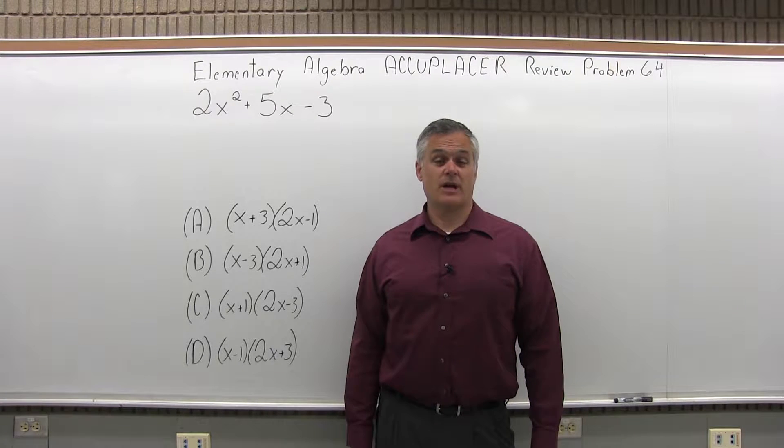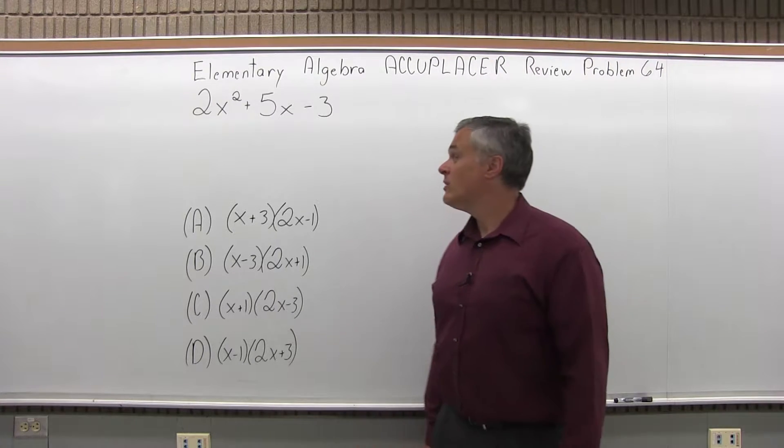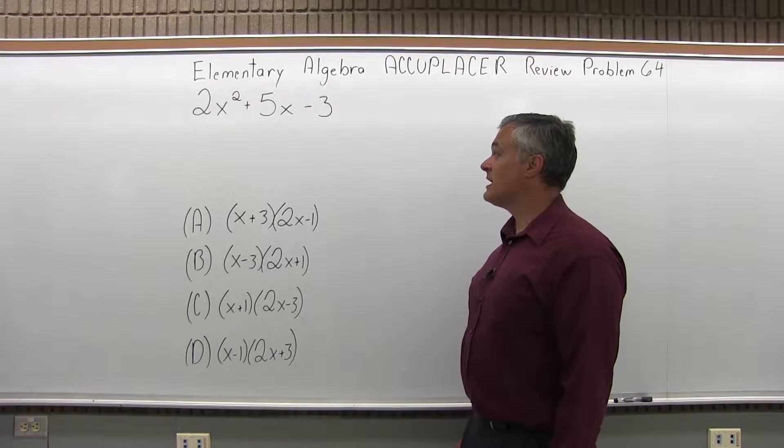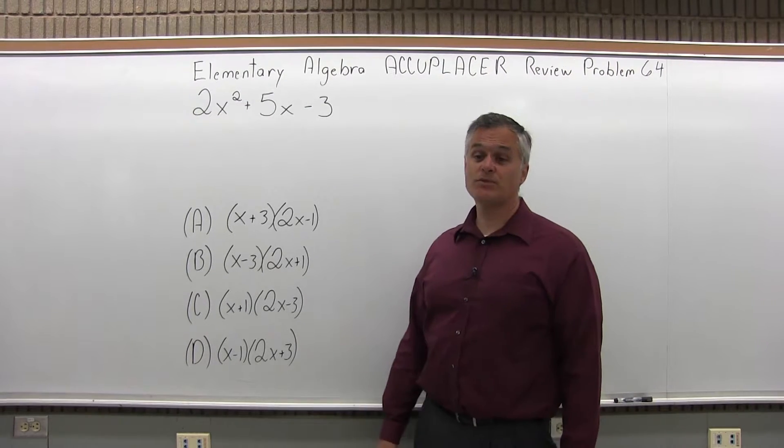This is the Elementary Algebra Accuplacer Review, Question 64. We have 2x squared plus 5x minus 3 equals which one of these following four options?